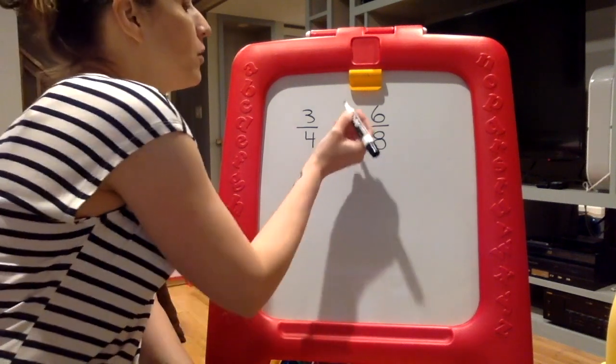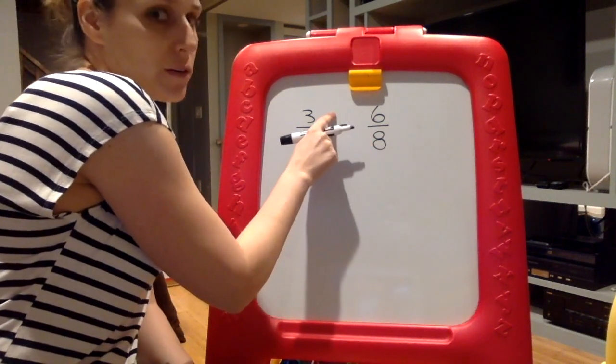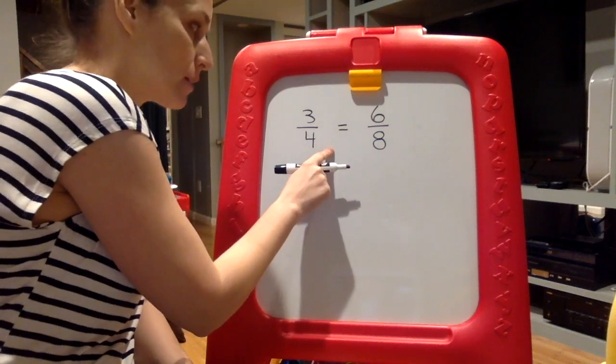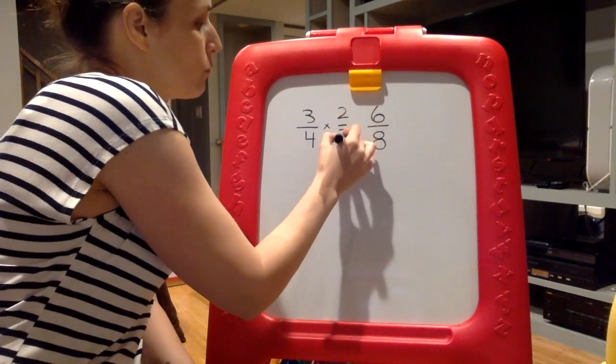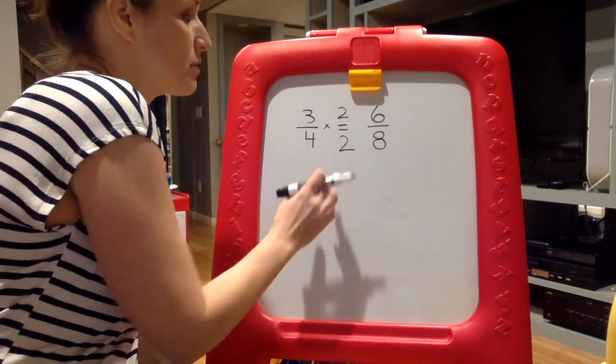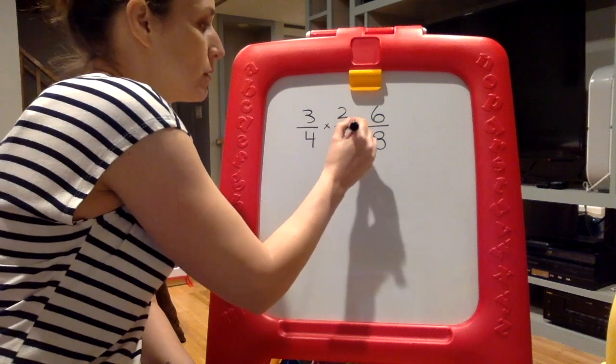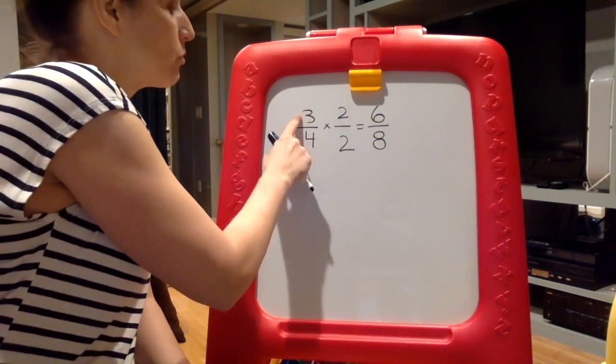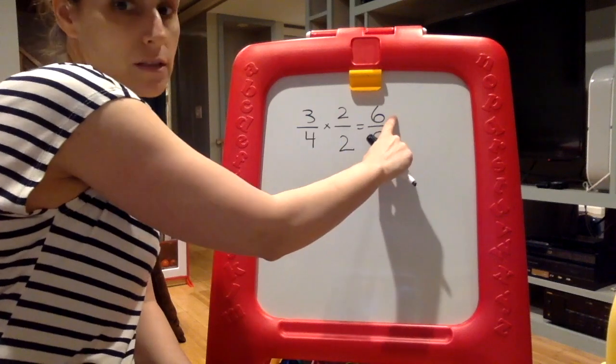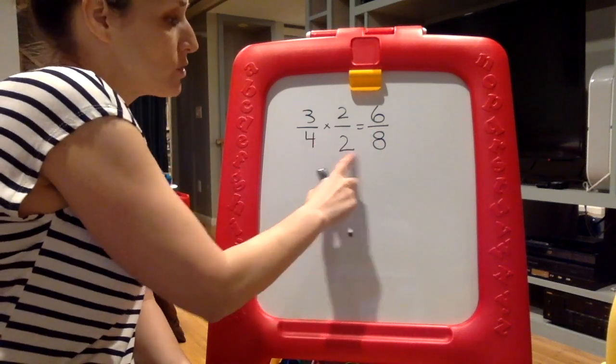We're going to start with three fourths and we're saying that's equivalent to six eighths. We want to know how we check that. Well, we know that whatever you do to the numerator, you also have to do to the denominator. So if we multiply by two over two, which has a value of one, we should be able to check. So three times two is six, four times two is eight.